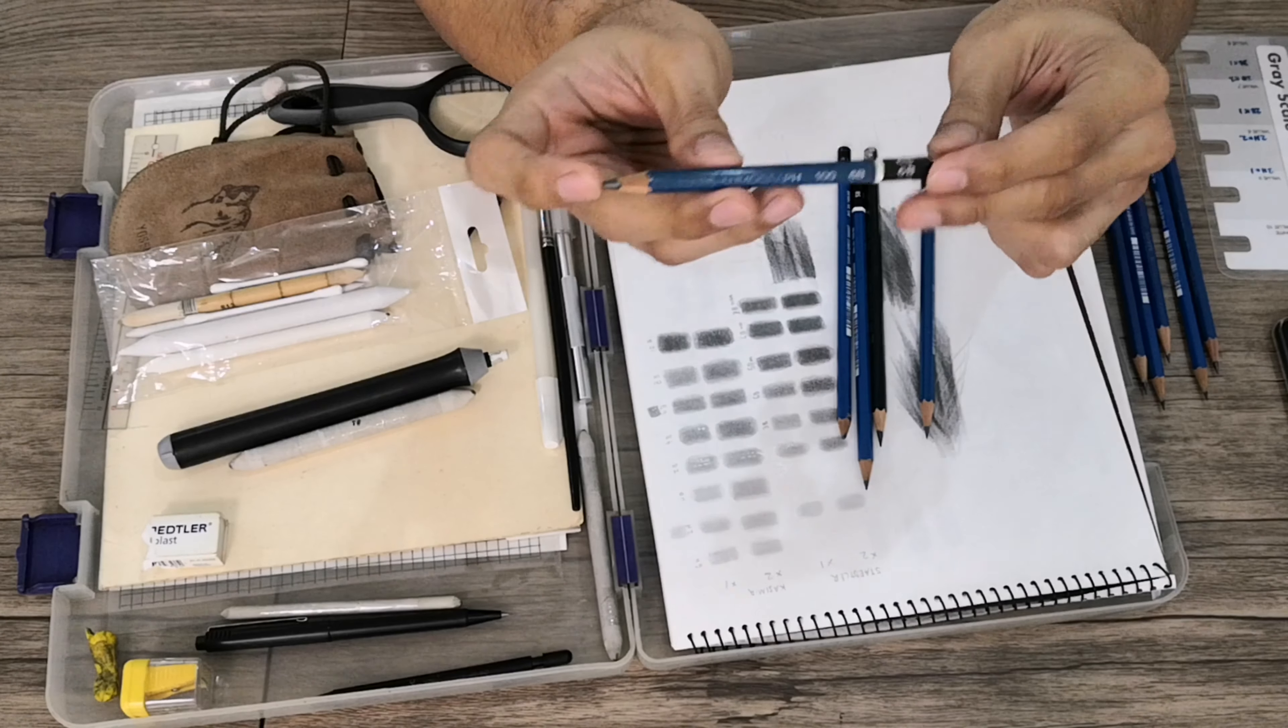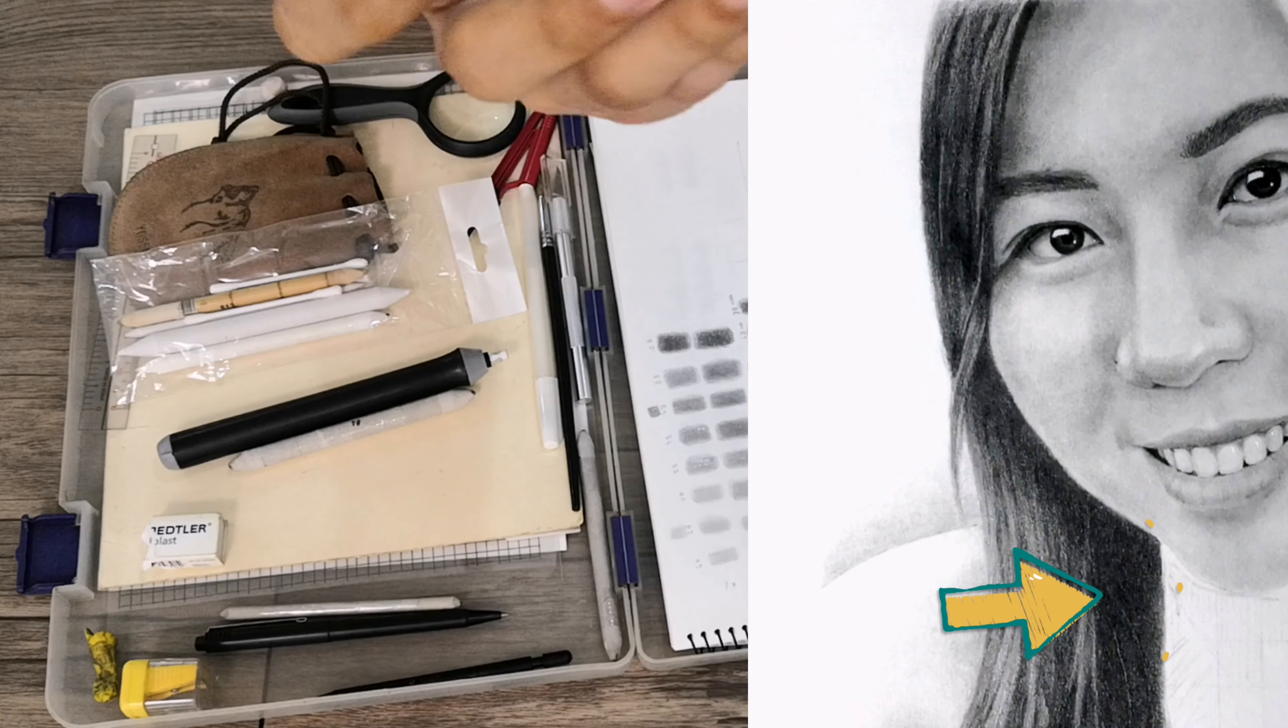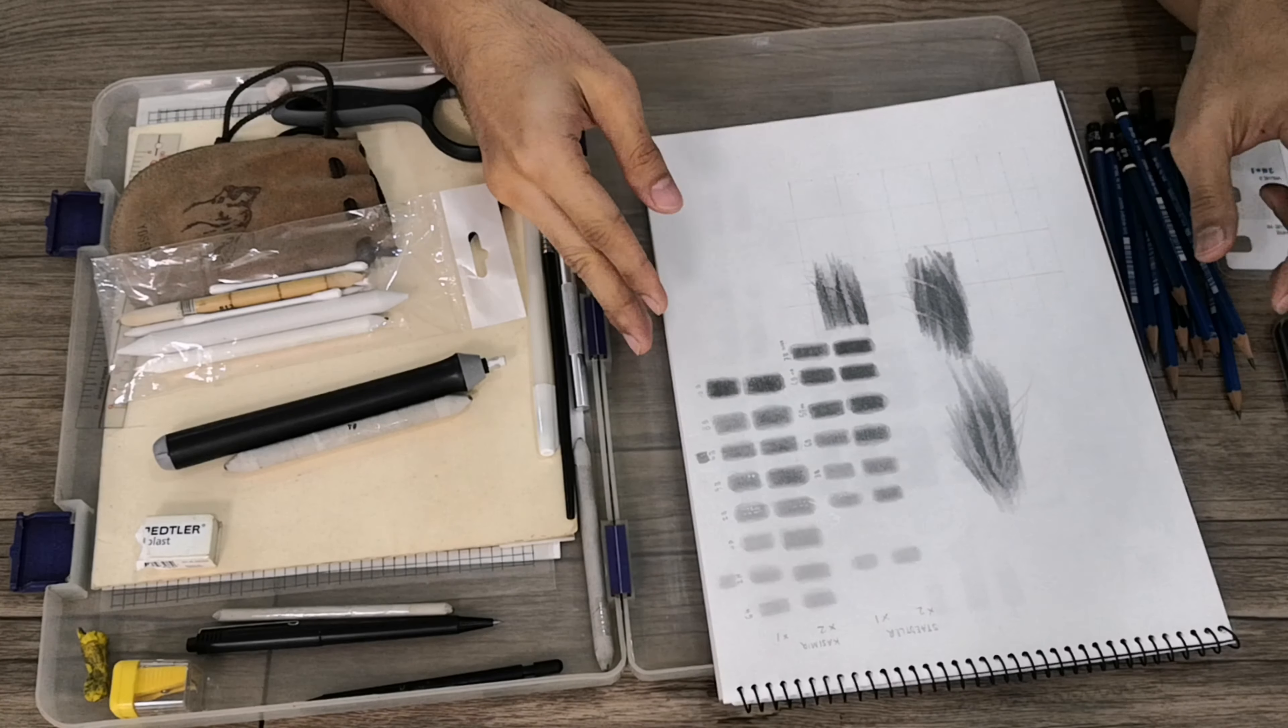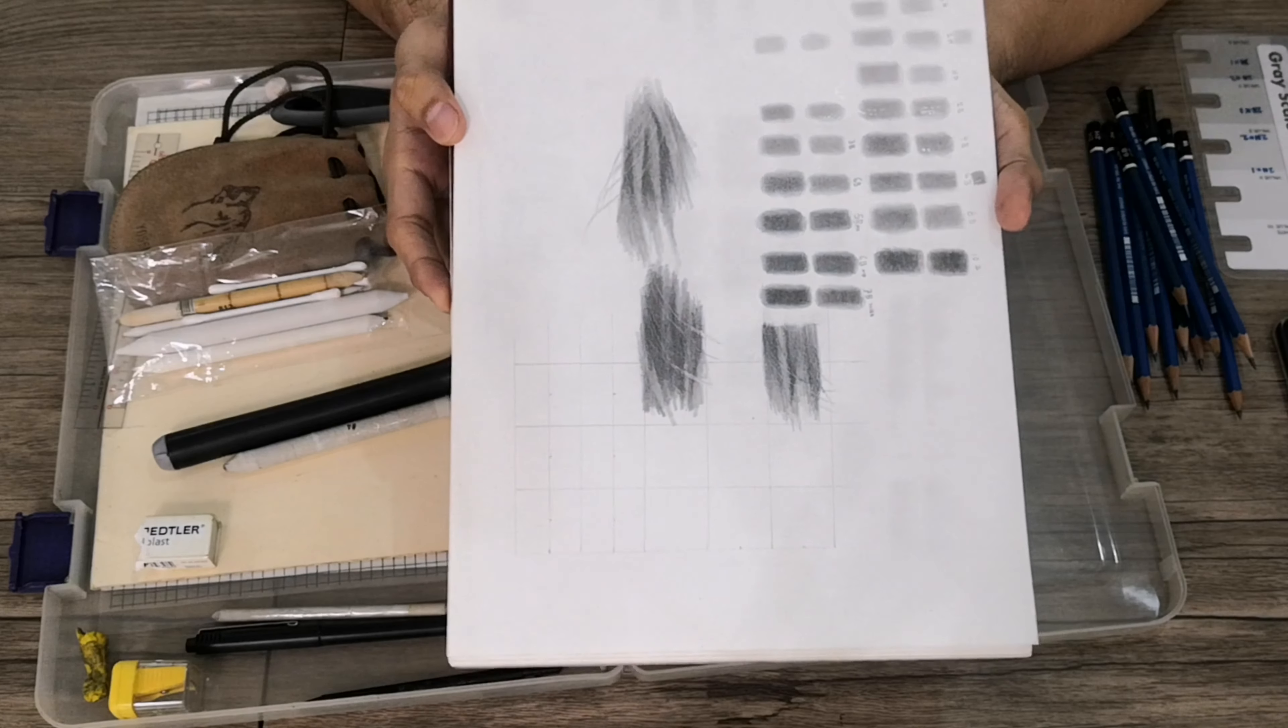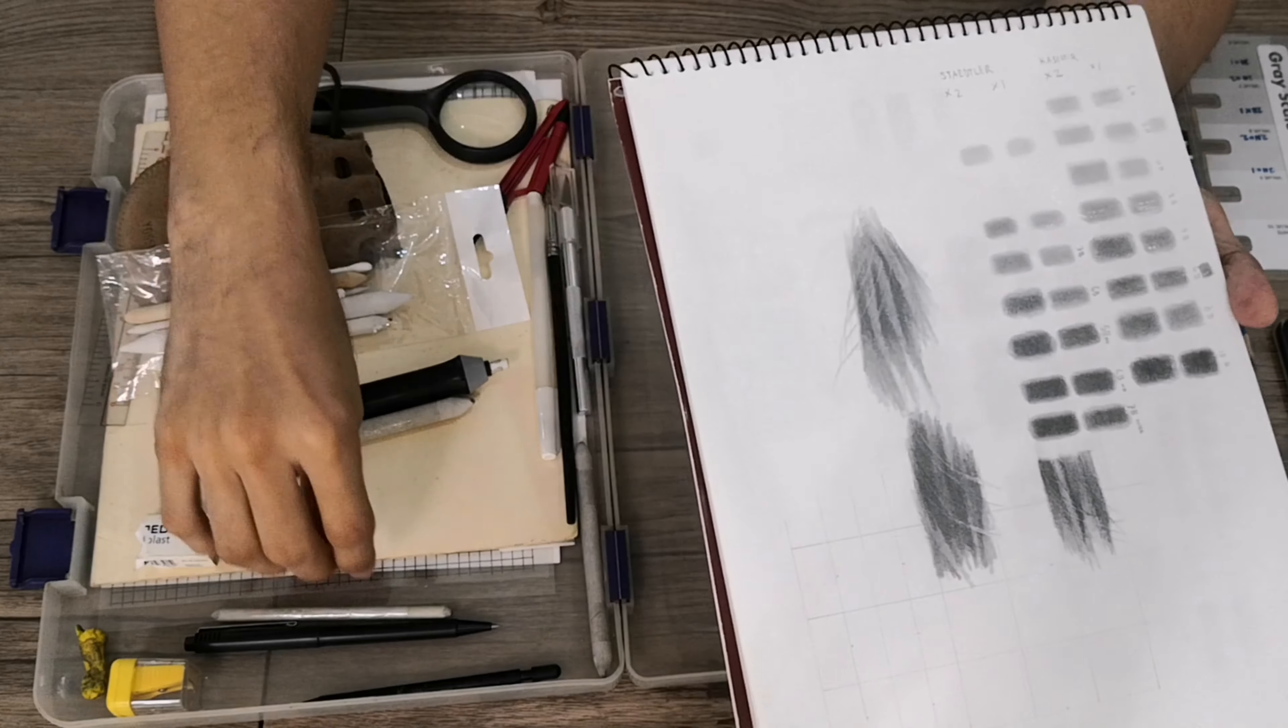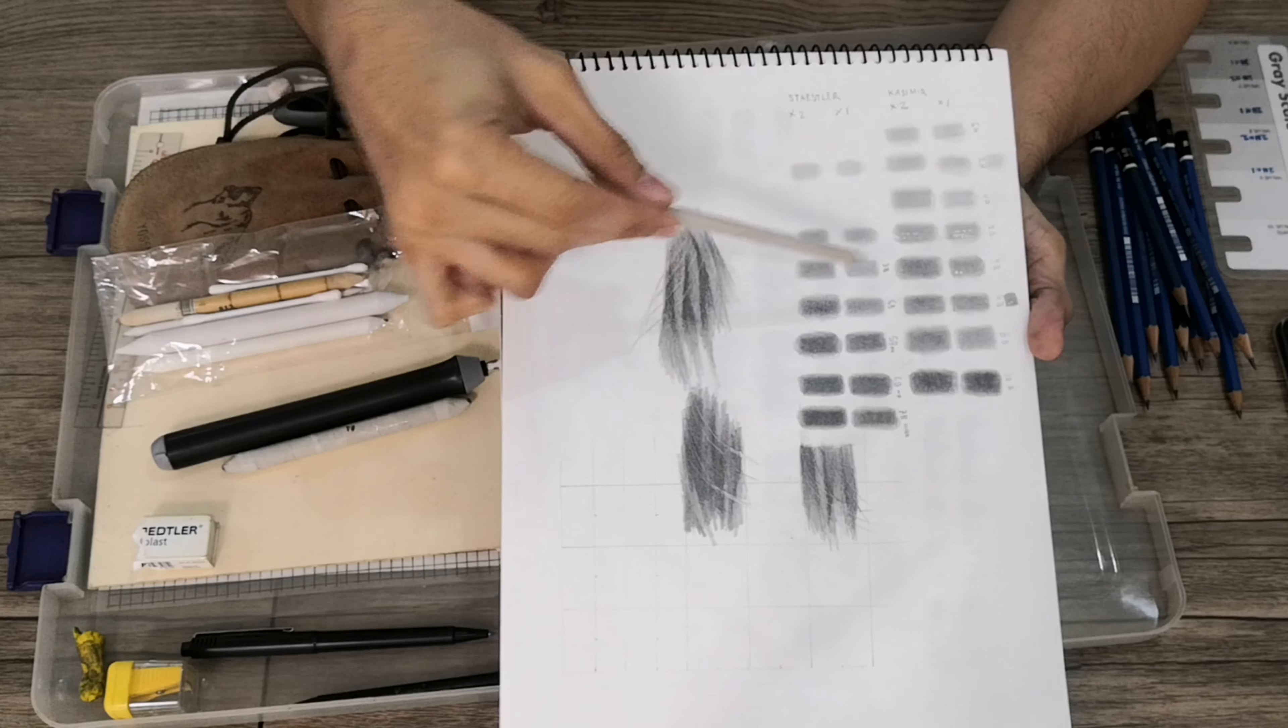And for the darkest I only currently have my 6B pencil, still Staedtler brand. I personally like the Staedtler brand compared with the others because it gives a more consistent type of shade. As you can see, the Staedtler brand, the shades are more consistent as compared with the other brands. I will discuss this later.